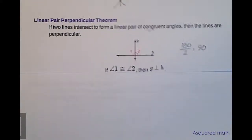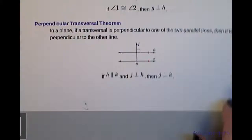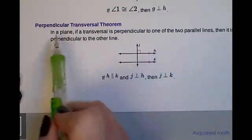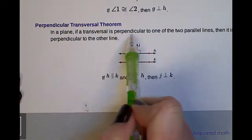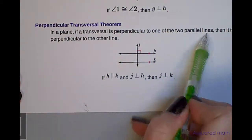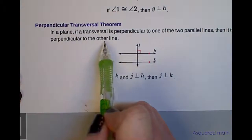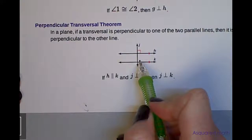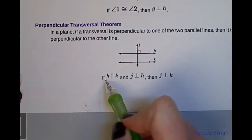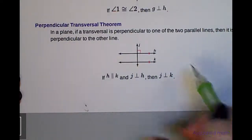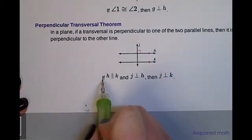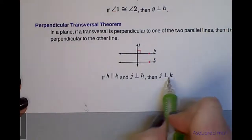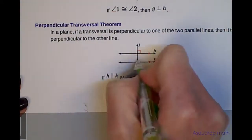Another theorem is the perpendicular-transversal theorem. In a plane, if a transversal is perpendicular to one of two parallel lines, then it is perpendicular to the other. We know these lines are parallel; by corresponding angles we can say both lines are perpendicular to the transversal. If H is parallel to K and J is perpendicular to H, then J is perpendicular to K.